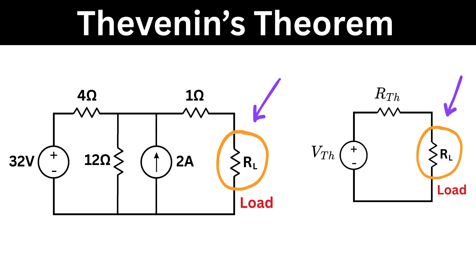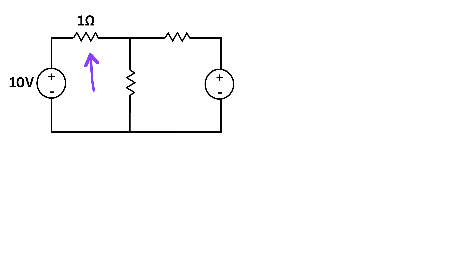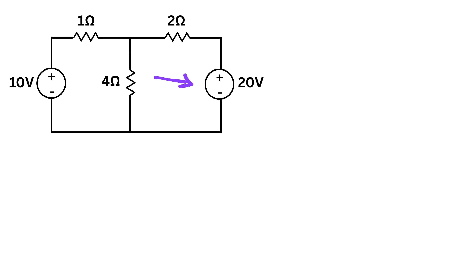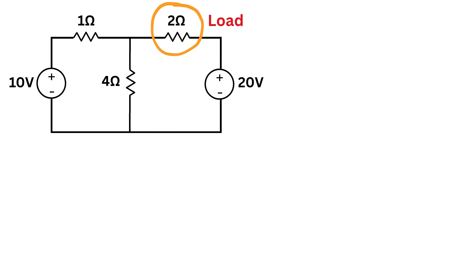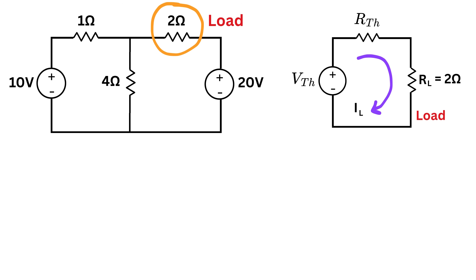Let us solve some examples. For the first example, consider the following circuit. The left battery has 10 volts, where this is the positive terminal and this is the negative terminal. This resistor is 1 ohm, this is 2 ohms, and this vertical resistor is 4 ohms. Finally, we have a right battery which is equal to 20 volts, where this is the positive terminal and this is the negative terminal. We want this 2 ohm resistor to be our load. So this will be our equivalent Thevenin circuit, and we want to find the value of VTH, then RTH, and current flowing through this 2 ohm load.